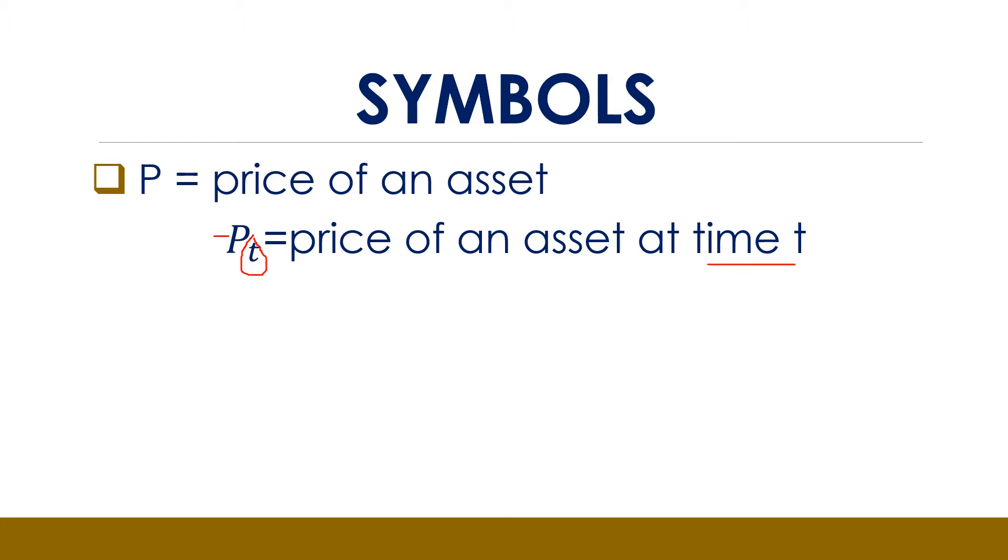The price of Equity will be different from the price of KCB, and so on. In such a case, the subscript will be used to indicate that price is changing with assets. This time, we don't use t, we use i. So we will have Pi, where now i is used to represent the change in price as you move from one asset to the other.